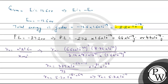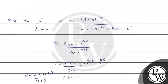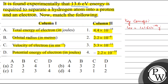Now we have matched all four quantities: total energy, potential energy, radius, and velocity of the nth orbit. So the answer for this question will be option B. Hope you understand the question. Best of luck.